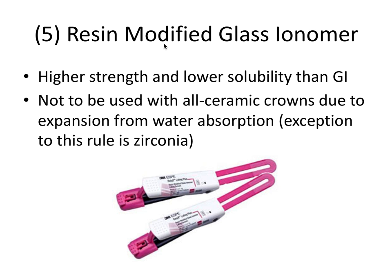The fifth cement is resin-modified glass ionomer, introduced in 1979, and it's the most commonly used cement today. RelyX Luting Plus is 3M's resin-modified glass ionomer on the market. This cement has a higher strength and lower solubility than glass ionomer, continuing to improve on the cement formula. The higher strength and lower solubility in the oral cavity comes from the addition of the resin component.